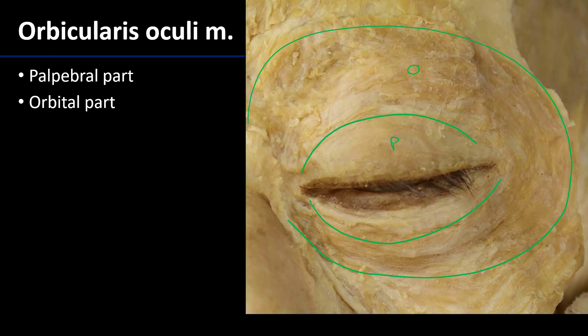The name orbicularis oculi: orbicularis means that its muscle fibers are circumferential, and oculi means of the eye. The third part of the orbicularis oculi muscle, the lacrimal part, would be deep to the medial canthus of the eye, just above the lacrimal sac.